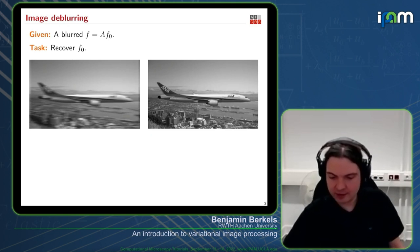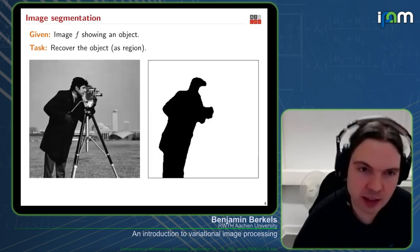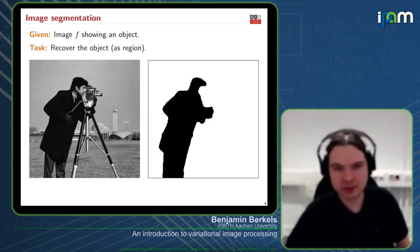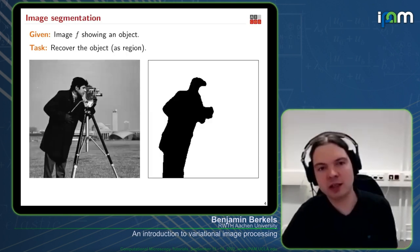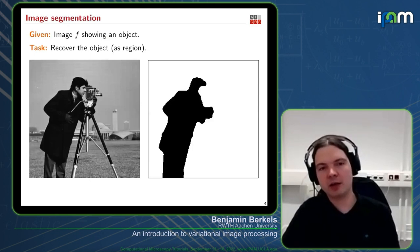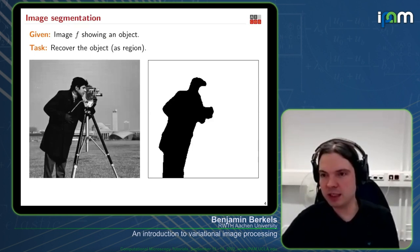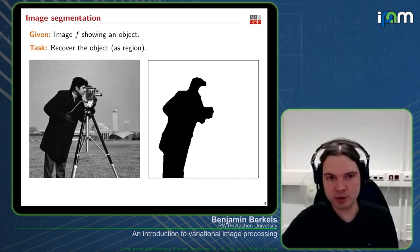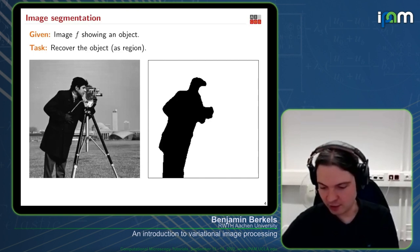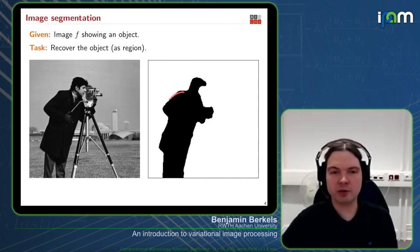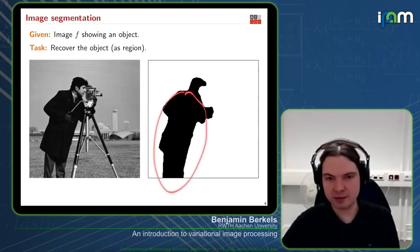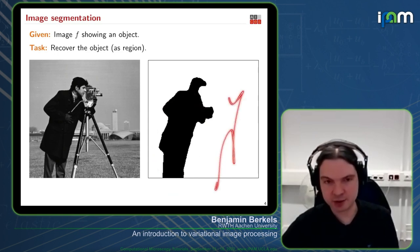Then there is image segmentation. Again, you are given an image, but now you want to decompose it into meaningful components — for instance, foreground and background. Here that would be the cameraman and the rest of the image.